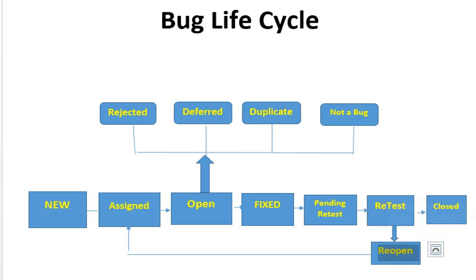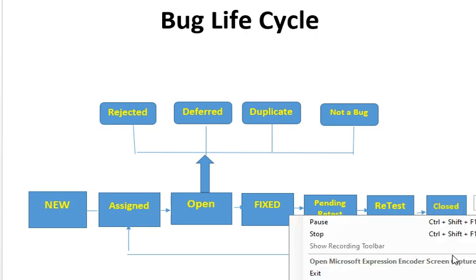If the tester still faces the defect even after deploying the developer's fix, the fix does not resolve the defect and the tester moves it to the Reopen state. Finally, once the tester verifies the fix and confirms that it resolves the bug, he moves the defect to the Closed state. This marks the closure of the defect lifecycle. So this is the process of the bug lifecycle — I hope you are enjoying my videos, thank you for watching.